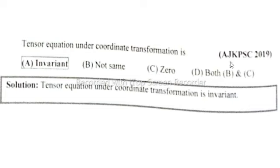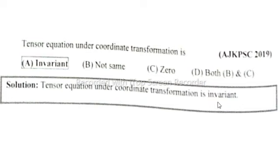In this lecture, I will solve AJK PSE 2019 MCQ: a tensor equation under coordinate transformation is invariant. So option A is correct, that is invariant.